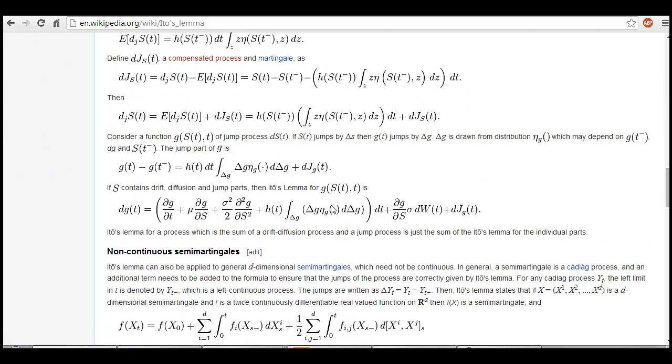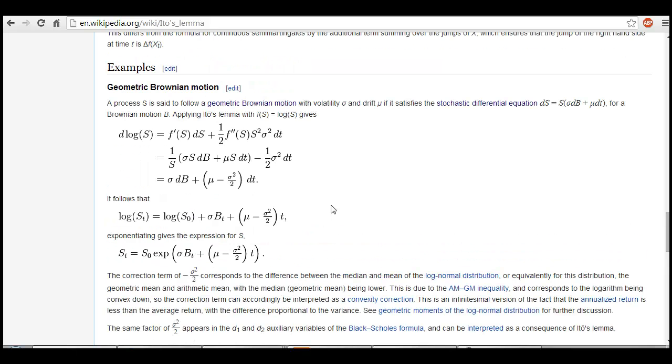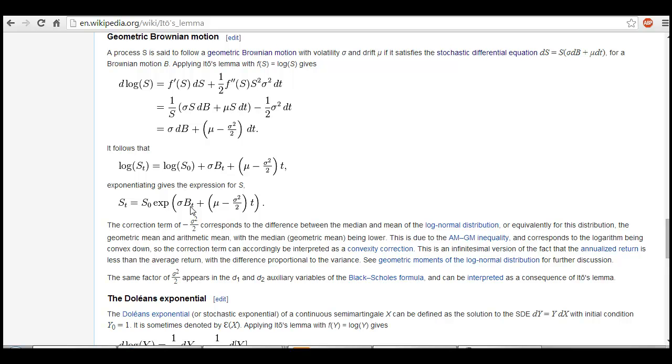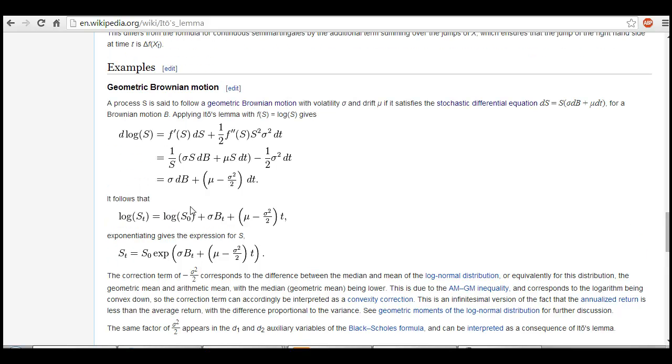So making it a bit simple, jumping on to geometric Brownian motion, if you look here, f prime s, f double prime s, and you will directly land to the place that you are looking for, which is the expected value. And here if you look, this bt is nothing but wt. So the Itô's lemma, if you look here, f prime s would help you get there.